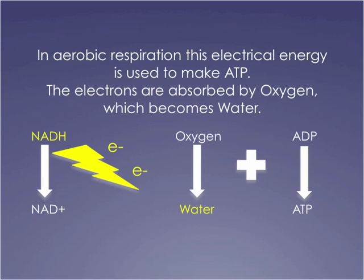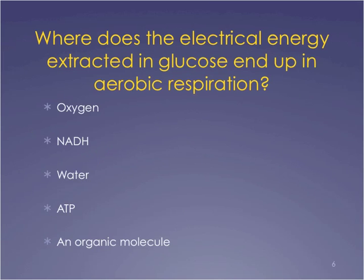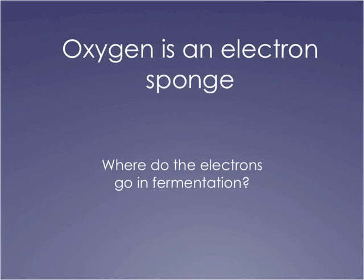It gets a lot more complicated than that — I hope you guys will all go look it up. But that's about the time we have for aerobic respiration. I want to focus on how fermentation differs from aerobic respiration. First, a question: where does the electrical energy extracted from glucose end up in aerobic respiration? Not on oxygen — not on NADH — it ends up on the water. So oxygen is an electron sponge. That's the role it plays in the cell.